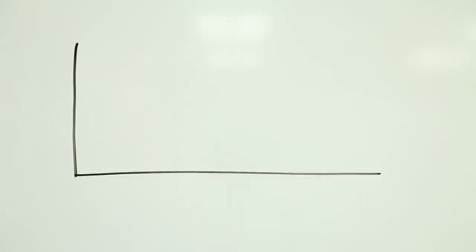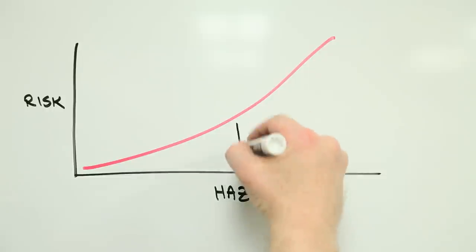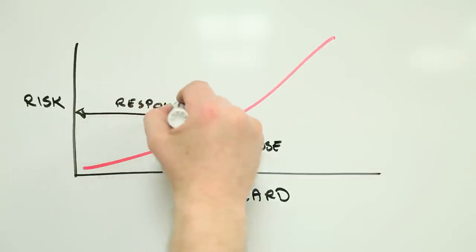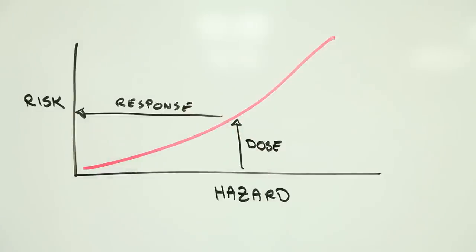Dose response is what allows scientists to connect hazard to risk and to put a number on the probability of something bad happening. And because of this, it is incredibly powerful. But as we'll see in future Risk Bites in this series, it can also get rather complex.